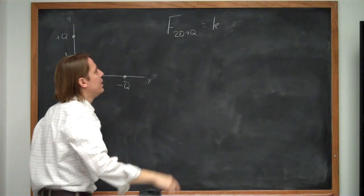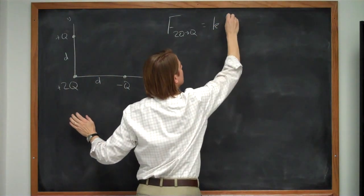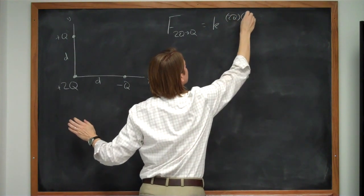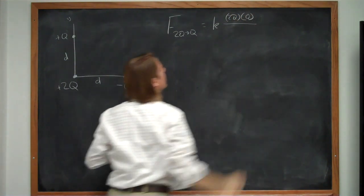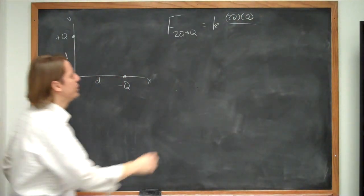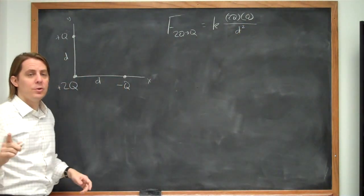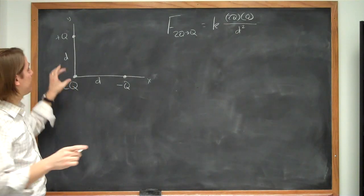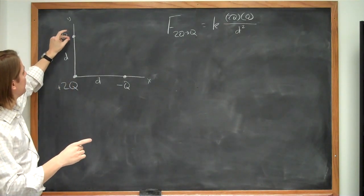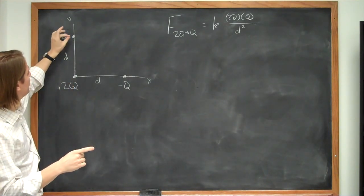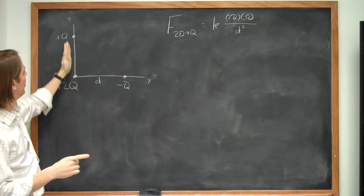times the product of the charges, 2q times q over separation squared over d squared. And since this is not one-dimensional, we have to do vectors. So the vector for this one is straightforward because it's on the axis. So these are aligned along the y-axis,